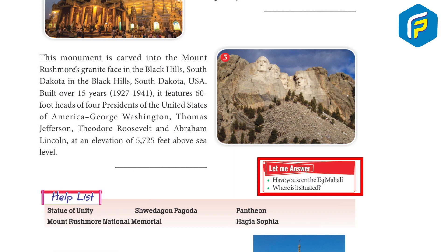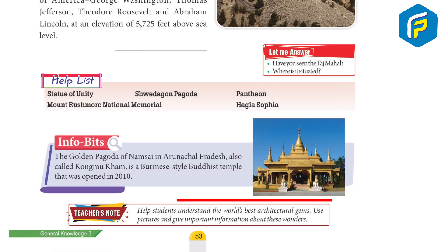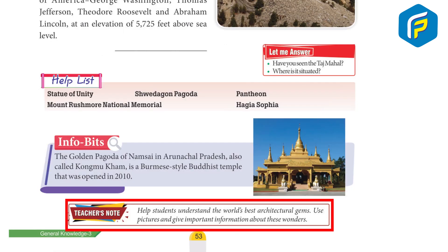The Golden Pagoda of Namsai in Arunachal Pradesh, also called Kongmu Kham, is a Burmese-style temple that was opened in 2010. Teacher's note: help students understand the world's best architectural gems — use pictures and give important information about these wonders.